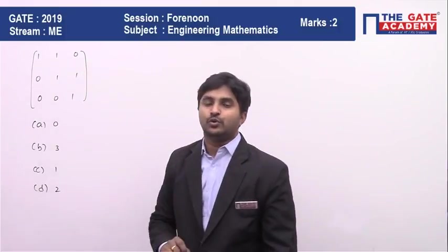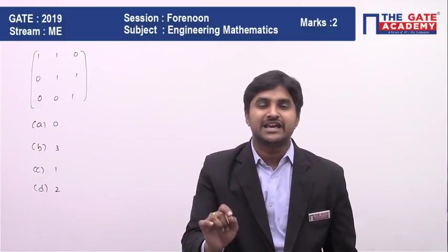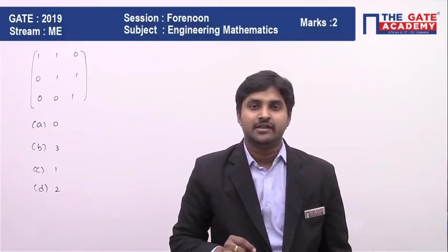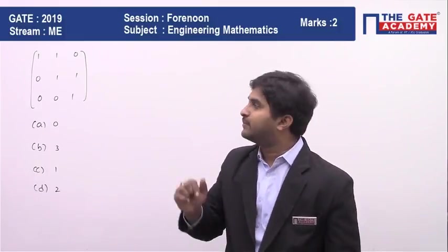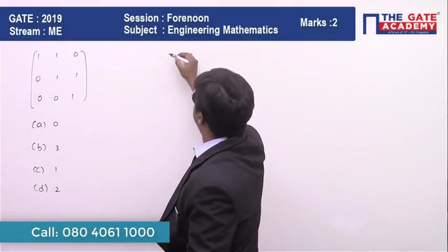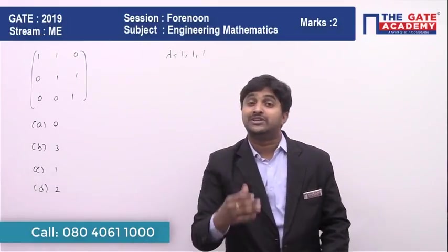So in the case of a triangular matrix, directly the eigenvalues are going to be the principal diagonal elements. It means that these 1, 1, 1 are going to be the eigenvalues. There will be three eigenvalues: 1, 1, 1. The question is about the distinct number of eigenvalues.